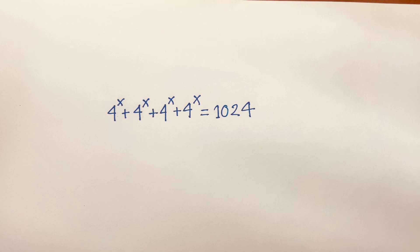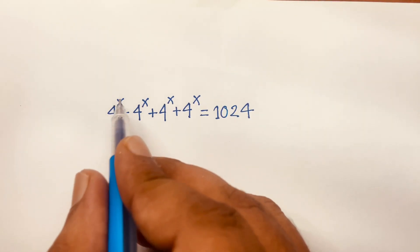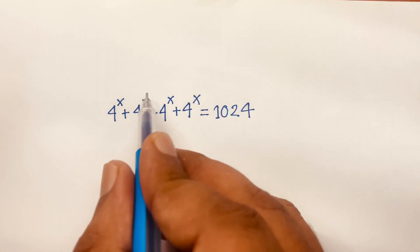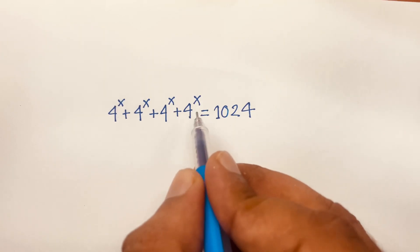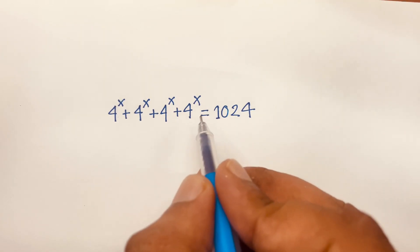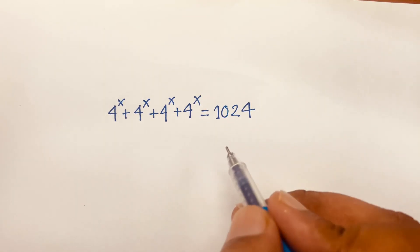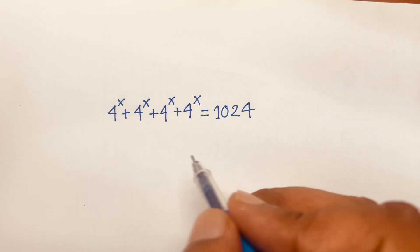We need to solve this exponential equation: 4 to the power x, plus 4 to the power x, plus 4 to the power x, plus 4 to the power x, is equal to 1024.